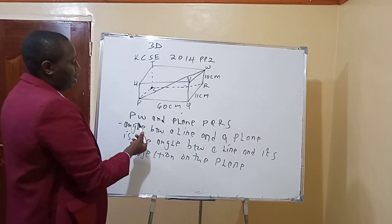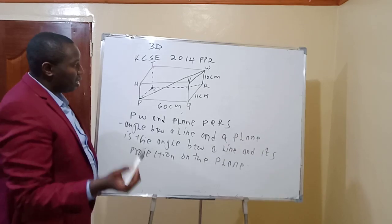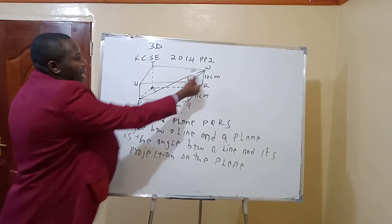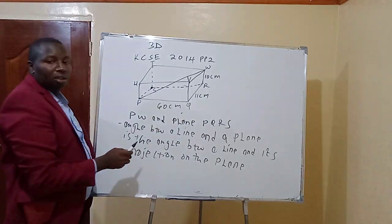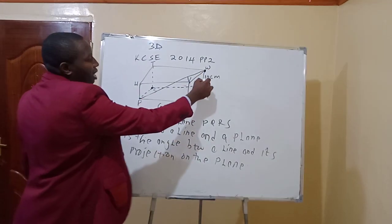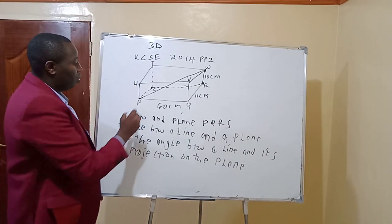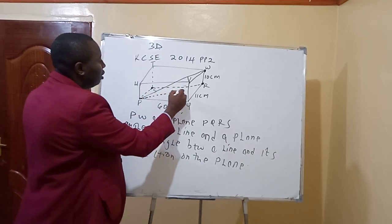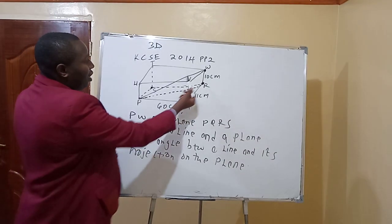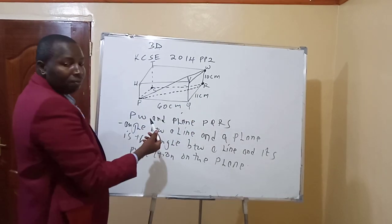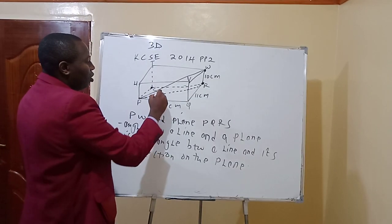You have PW as the line and PQRS as the plane. The first thing to consider is where does line PW make an angle of 90 degrees with the plane PQRS. PW meets the plane at 90 degrees at point R. So you join P to R. The angle that line PW makes with plane PQRS is angle WPR, because the projection of line PW onto the plane is PR.